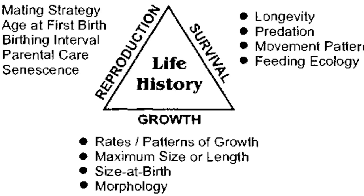Why do populations evolve? To maximize their reproductive fitness, also called Darwinian fitness. Some organisms breed once in a while, others breed many times. Some produce large numbers of small-sized offspring while others produce small numbers of large-sized offspring. Ecologists suggest that life history traits have evolved in relation to the constraints imposed by the abiotic and biotic components of the habitat.